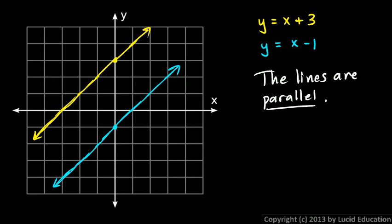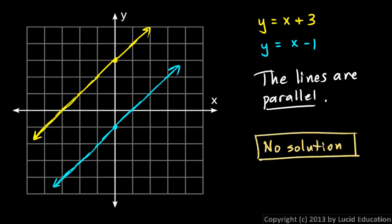We say there is no solution to the system of equations. If you were writing down your answer, you would simply write 'no solution' and maybe add a little explanation: 'no solution because the lines are parallel.' We can see that from the graph or from looking at the values for the slope.